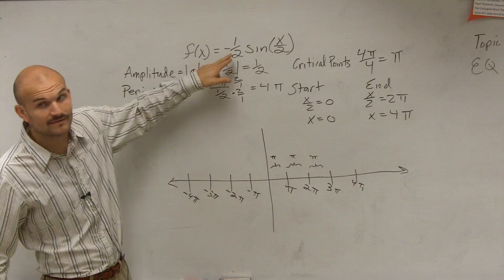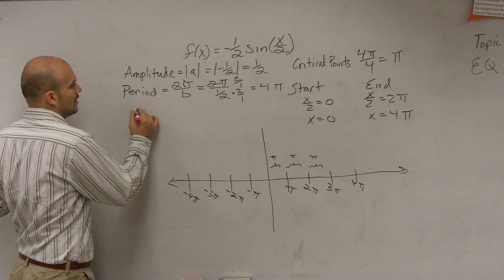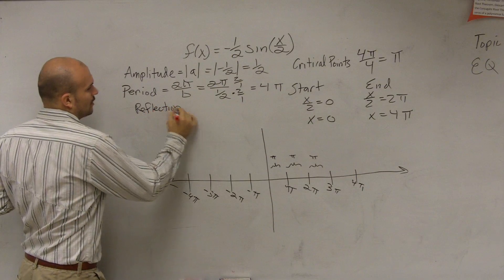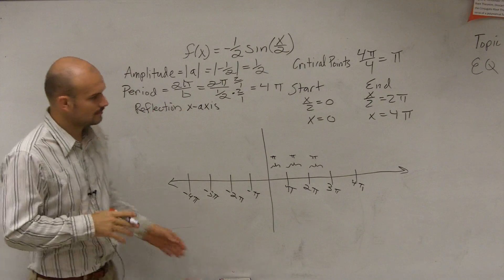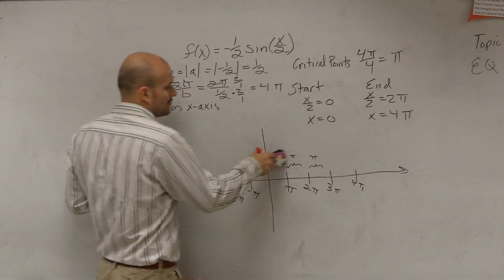We also notice that there's a negative inside this function. So therefore, we're going to have a reflection over the x-axis. So we're going to have a reflection over the x-axis because I have a negative a.